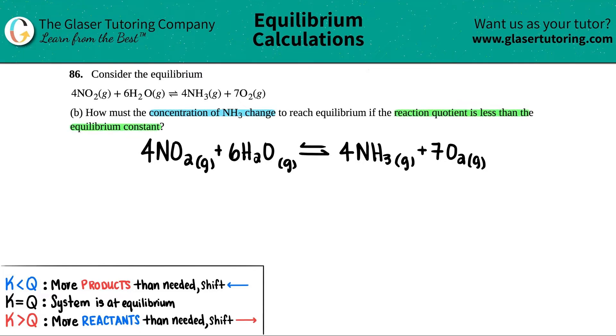So another kind of refresher question. We learned earlier in the chapter, and if you guys have been on the playlist, we've learned earlier in the playlist that the reaction quotient is a Q value and the equilibrium constant is a K value.